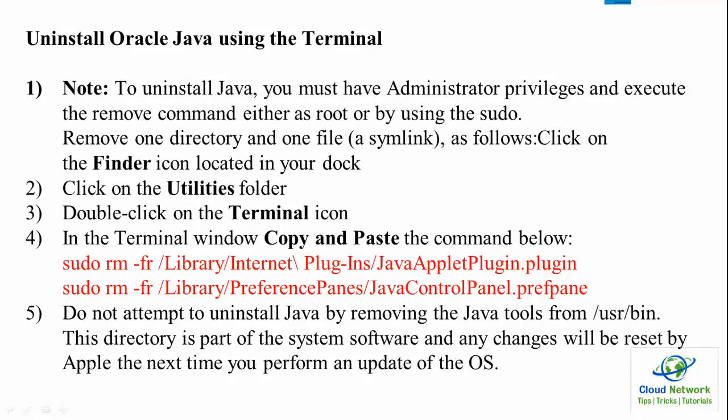To install Oracle Java using the terminal, you must have administrator privileges. Execute the command either as root or using sudo. Go to Finder, open the Utilities folder, and double-click the Terminal icon. Open the terminal, copy and paste the commands from the description box — paste the first command, press Enter, then paste the second command and press Enter. Do not attempt to install Java by removing Java tools from '/usr/bin', as this directory is part of system software and any changes will be reset by Apple the next time you perform an OS update.